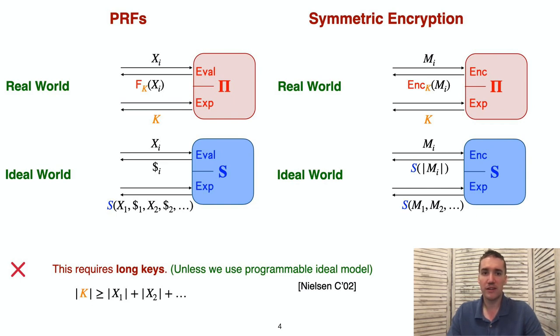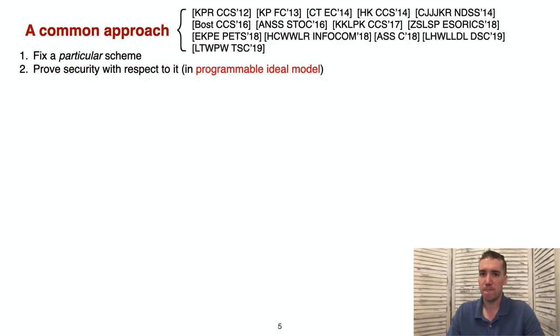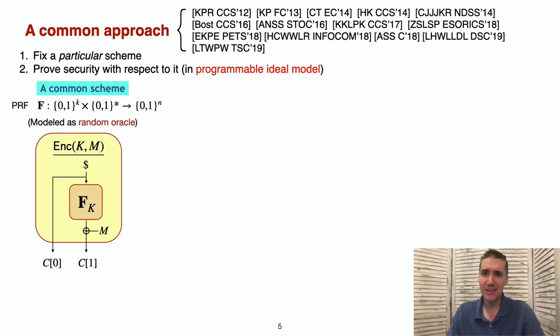In our motivating example, they tended to follow a common approach. They would first fix a particular encryption scheme, or PRF, and then prove security of their higher-level protocols using this scheme in some programmable ideal model. A common scheme used in these examples worked as follows.